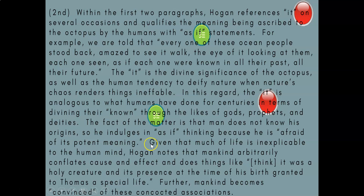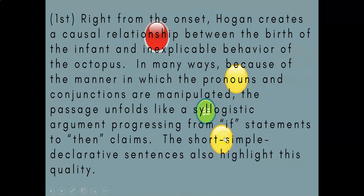The student continues: 'Given that much of life is inexplicable to the human mind, Hogan notes that mankind arbitrarily conflates cause and effect and does things like think it was a holy creature in its presence at the time of his birth granted to Thomas a special life.' That's a slightly abrupt quote transition, but okay. 'Further, mankind becomes convinced of these concocted associations.' That's the it and the as-if — thoroughly done. Quote, analyze, quote, analyze, paraphrase, analyze — that one-two jab keeps the analysis active.